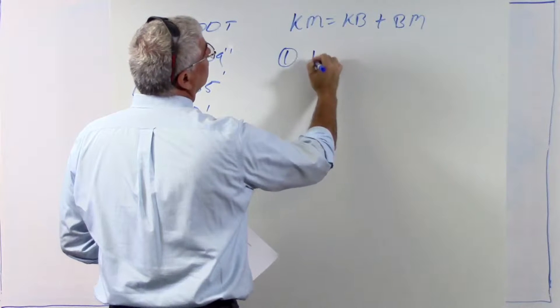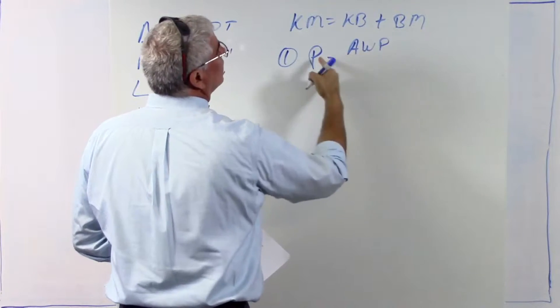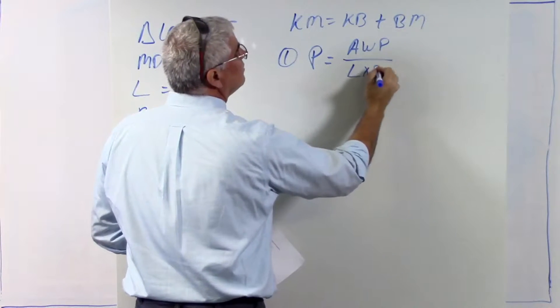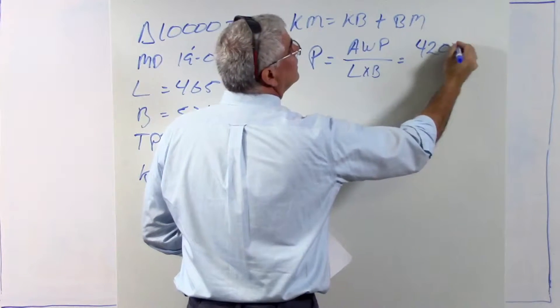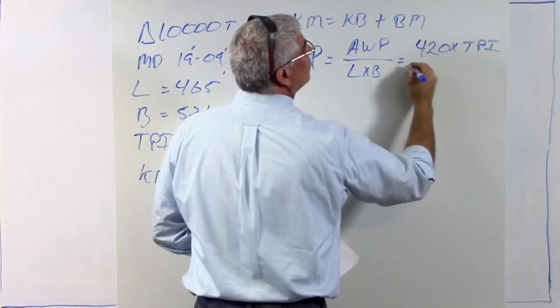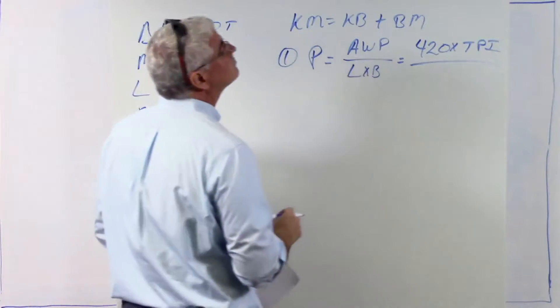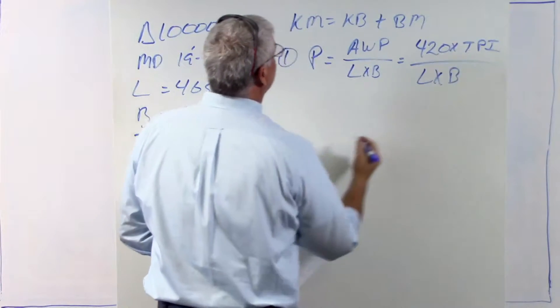So step one, calculate p. Well, it turns out that p is area of the water plane, that's the water plane coefficient, by the way, p, divided by length times beam. And I can break area of the water plane further down into 420 times TPI. We're not going to derive any of these formulas in this video. We're just going to use them. And that's length times beam. So that's step one.